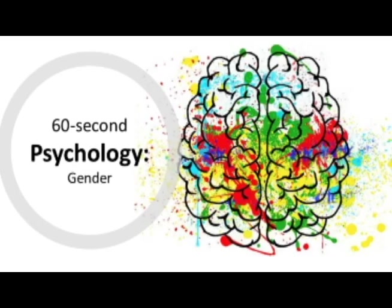The term binary is the idea that there are two distinct states, such as on or off, or male or female. However, gender is seen as non-binary, which means it can't be seen as two distinct states, so gender is often described as a spectrum. Individuals may not identify exclusively as male or as female, but across a range of other identities.